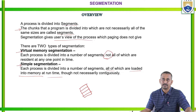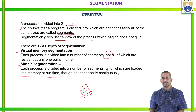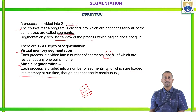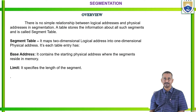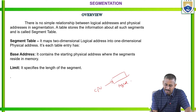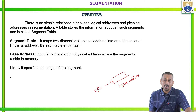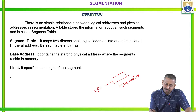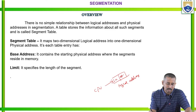In simple segmentation, segments are not necessarily stored in a contiguous manner. Whenever the processor generates a logical address, that particular logical address is divided into two parts: a segment number and a segment offset.